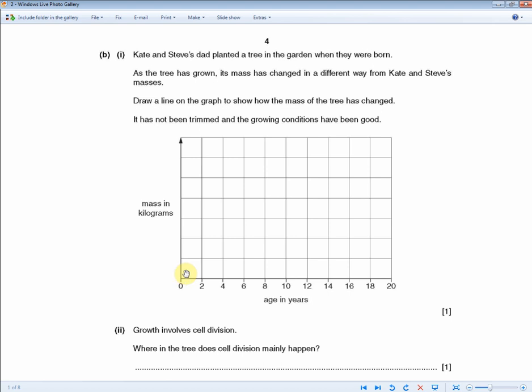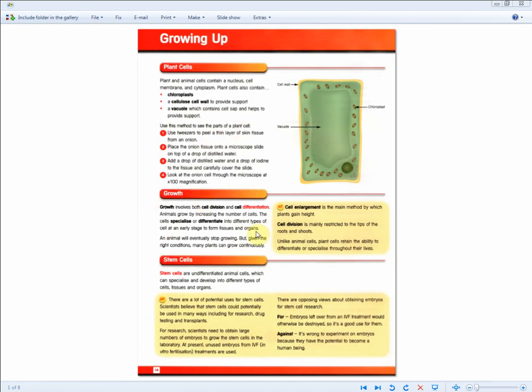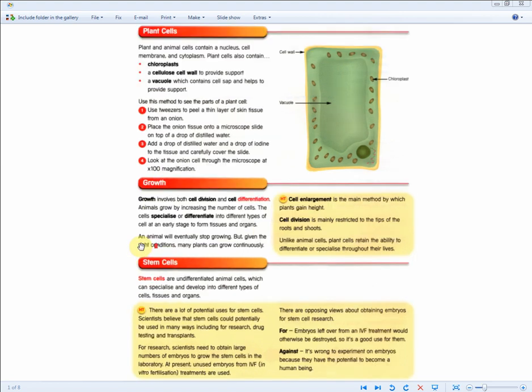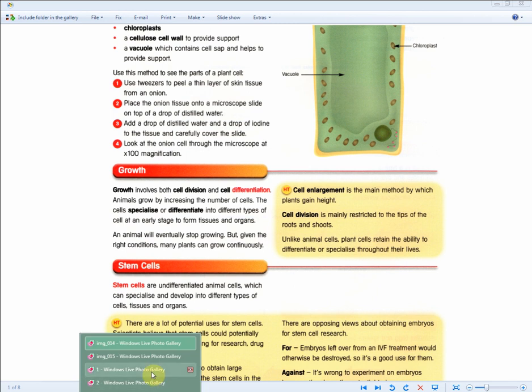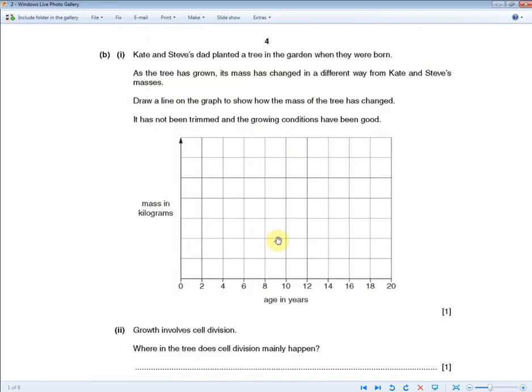So where, from the origin guide should you look for some help is basically here on the growth section of the plants, and we are told that an animal will eventually stop growing, but given the right conditions, many plants can grow continuously. Growing continuously, that's very important. So if we return back to the exam question, the whole point is the graph needs to reflect that information, and the only way you can do that is you make sure that the graph does not level off.